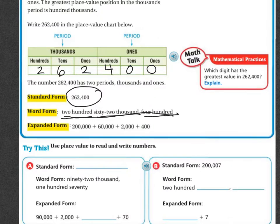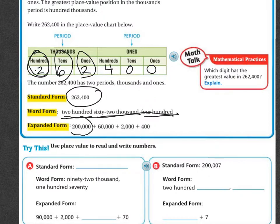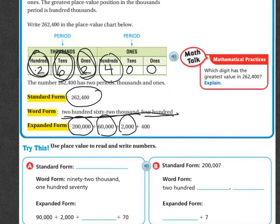Expanded form is when you show the place value of each digit. This two represents two hundred thousand, this six represents sixty thousand, this two represents two thousand, and this four represents four hundred. If we had non-zero digits in the tens and ones places, we would write those too — but because they're zeros, we don't need to go any further.